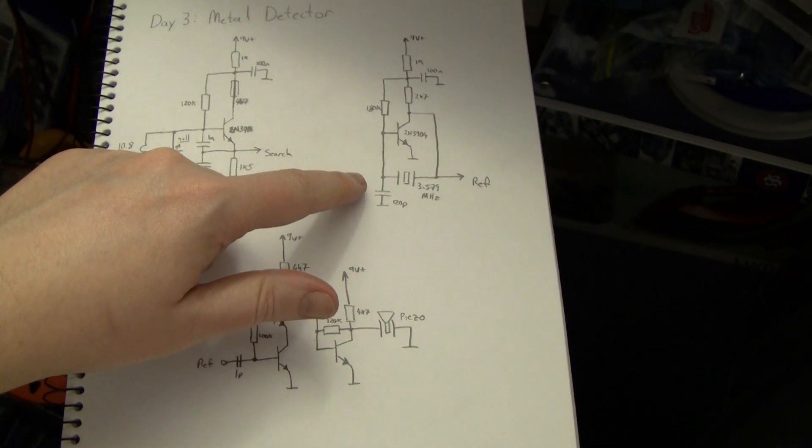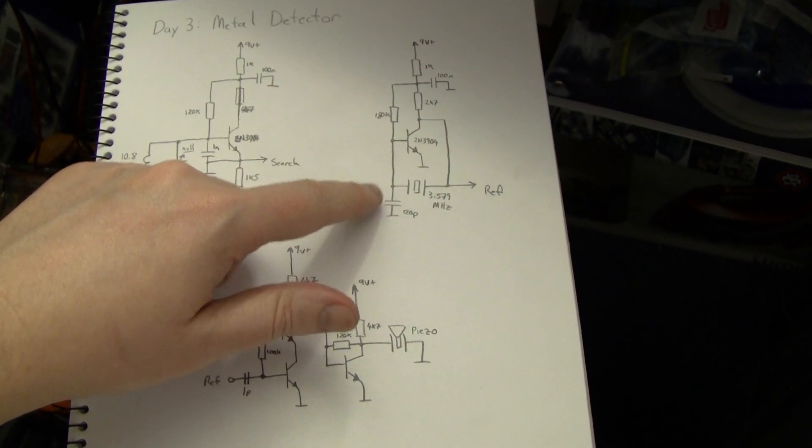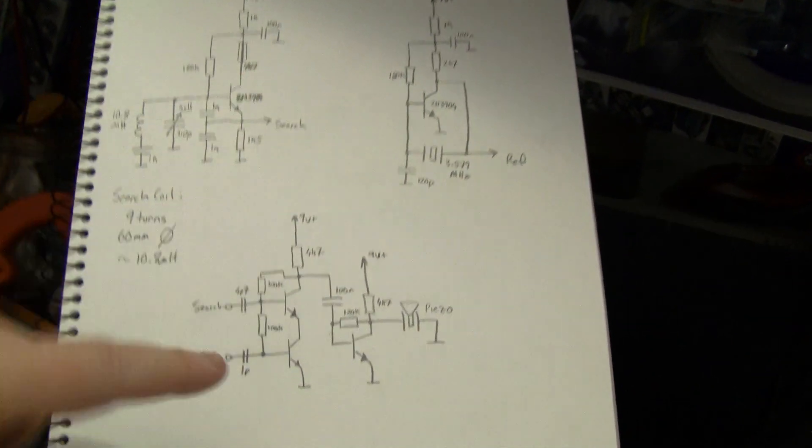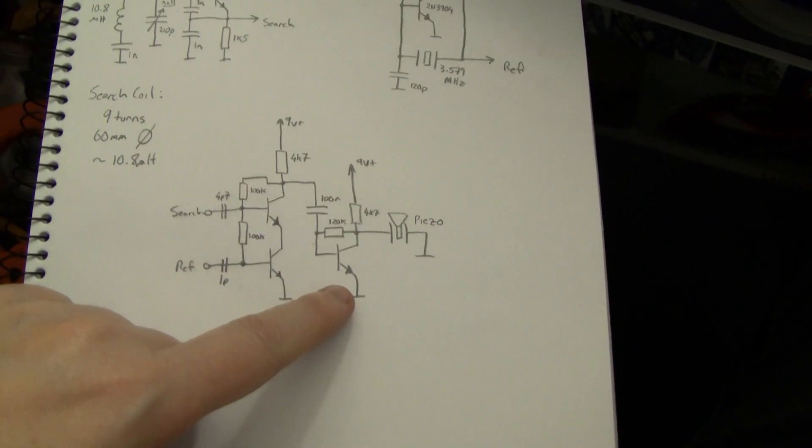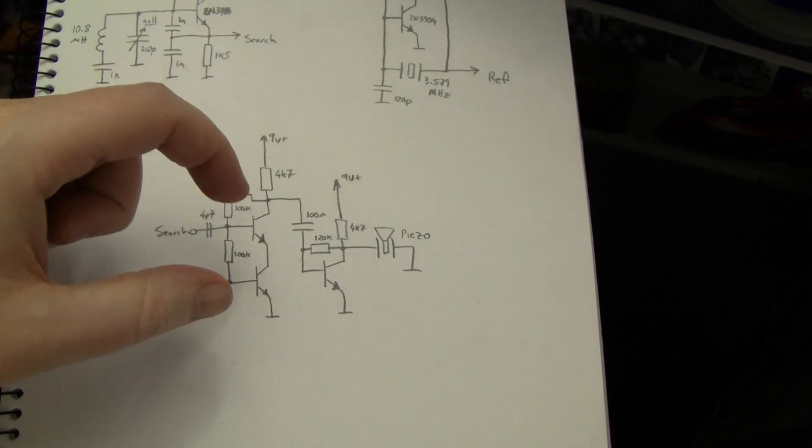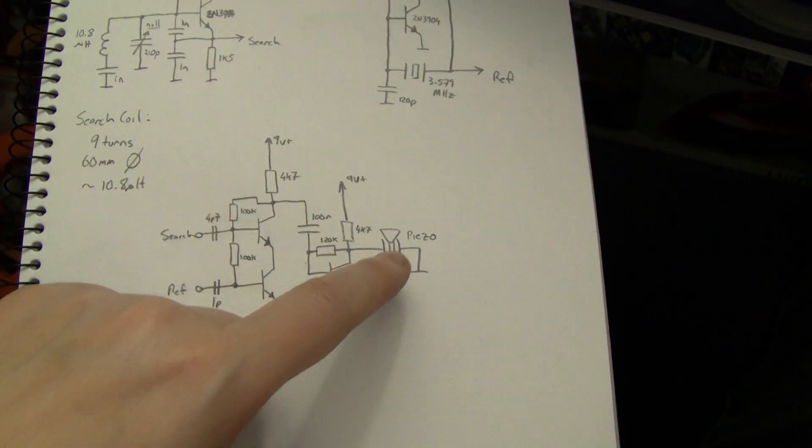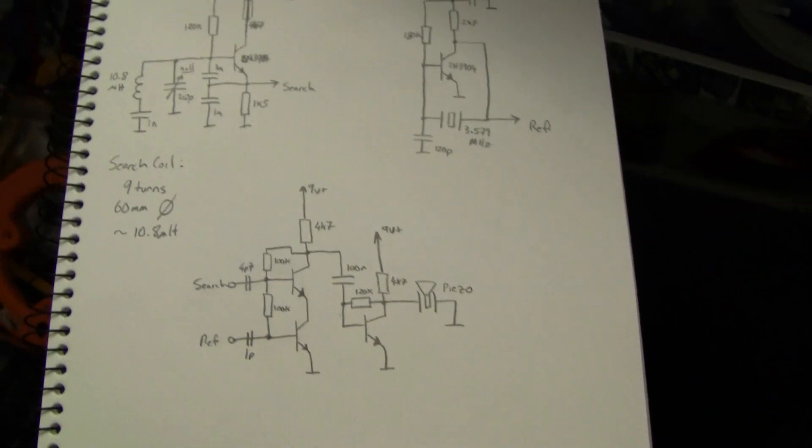It has a reference oscillator, which is a 3.579 Colorburst crystal Pierce oscillator, and it has a mixer and an audio amplifier that basically just mixes the two signals together and produces a low frequency baseband tone, which is unamplified, and you can hear it.